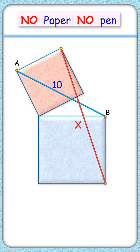Without using any paper or pen, can you find the length x here, given are two squares inclined at unknown angle and the distance between vertex A and B is 10 cm.